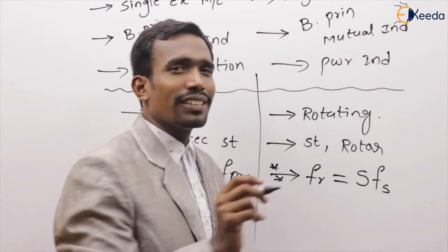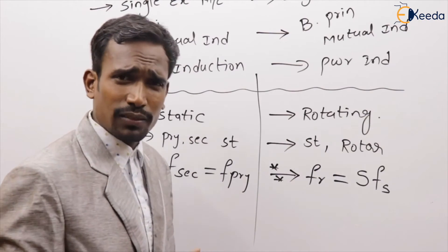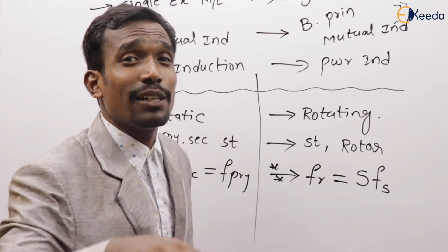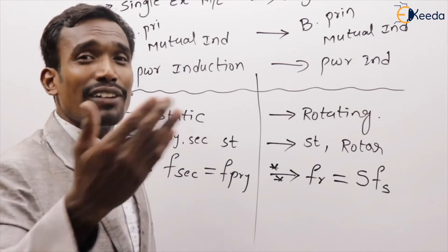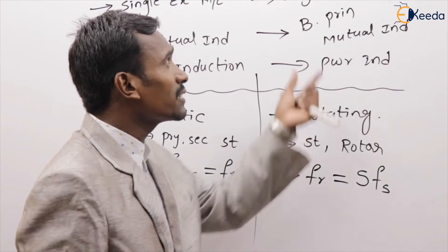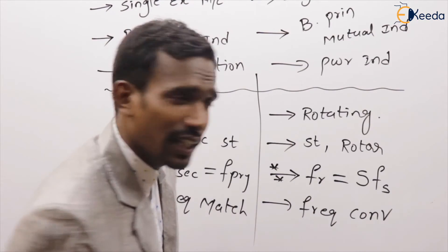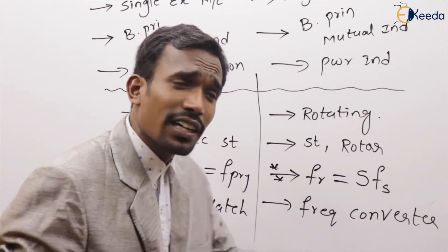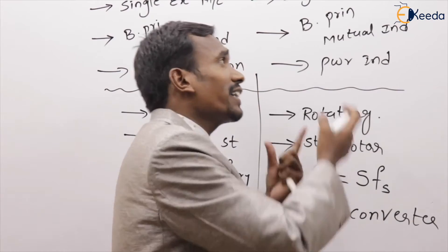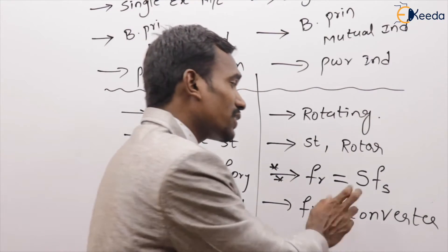The rotor frequency equals slip times the stator frequency. Because of this, the transformer is called a frequency matching device, whereas the induction machine is called a frequency converting device or frequency converter. The induction machine converts frequency because the rotor frequency is slip times the stator frequency.